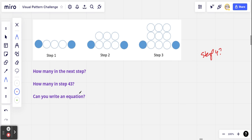If you can do that, can you predict the number in step 43? And can you write an equation that could be used to predict the number in any step at all? So that's the challenge. If you'd like to accept it, pause the video and see what you can do.